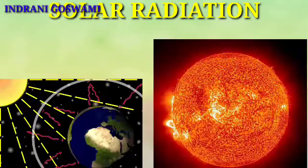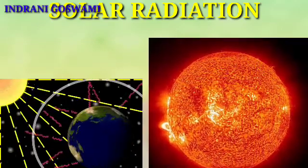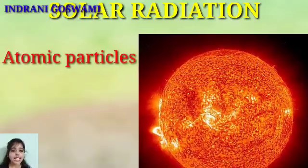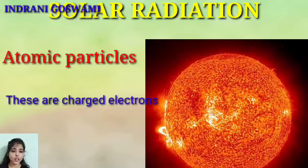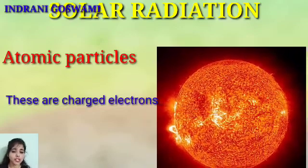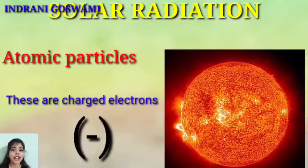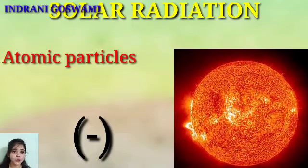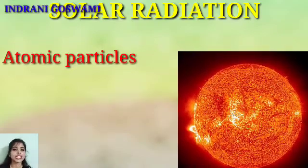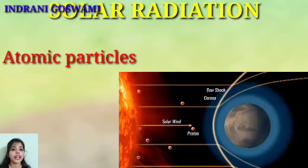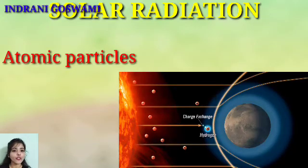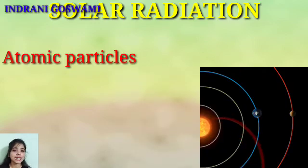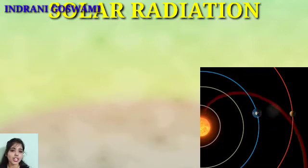Along with this, the sun also radiates some important atomic particles from its body. These atomic particles are generally charged electrons — that is, negative ions. These negative ions affect the entire magnetic field of the Earth's surface. So solar radiation not only transfers heat but also affects the Earth's magnetic field.